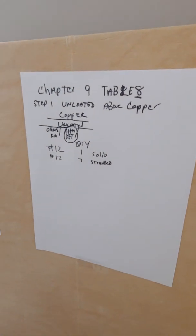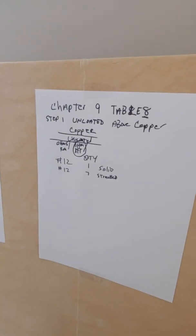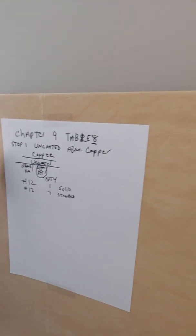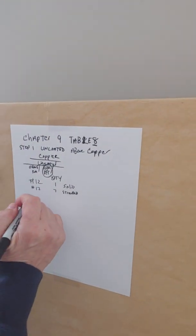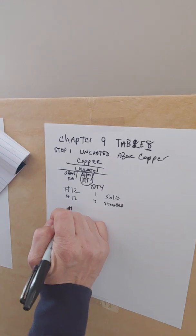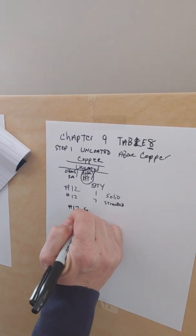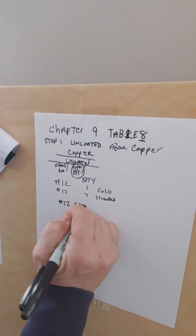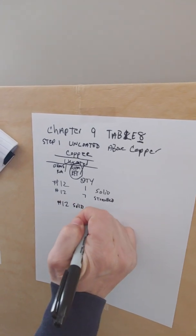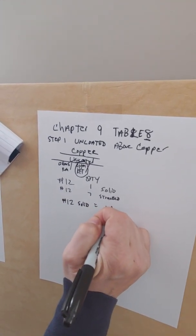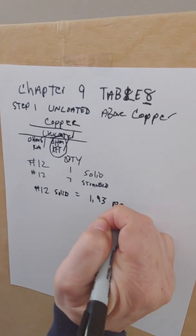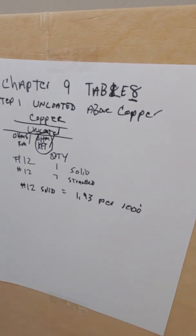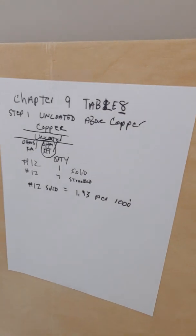We're going to set this up. If you look, a number 12 solid, which is one, is equal to 1.93 per thousand feet.